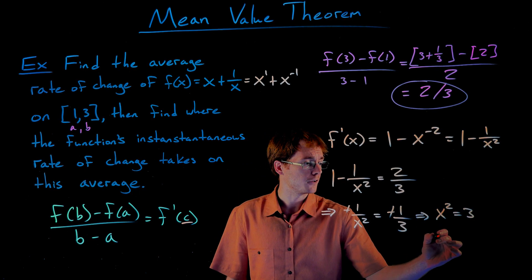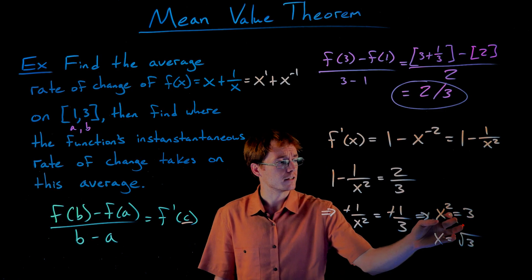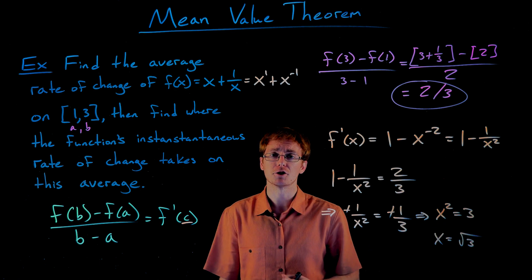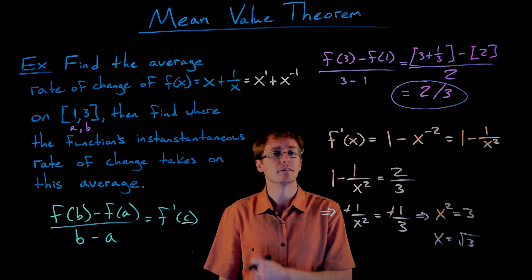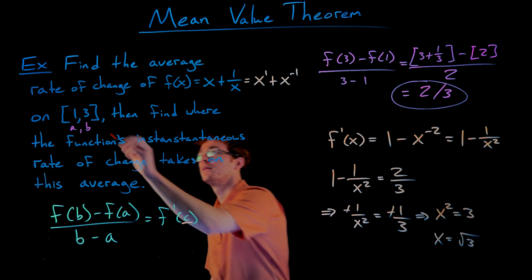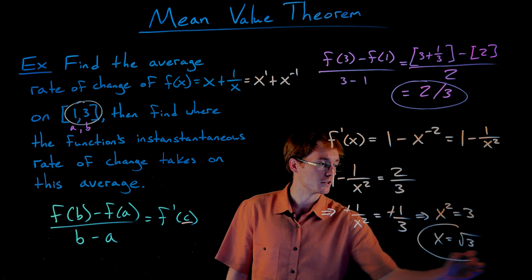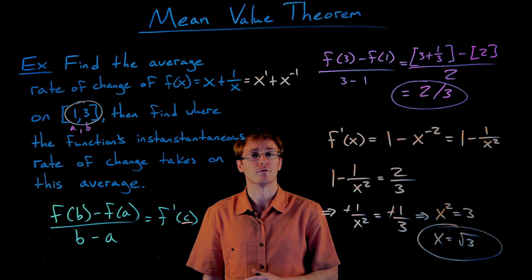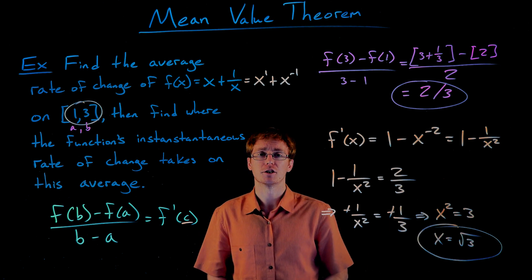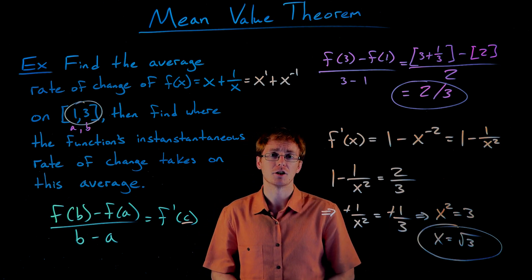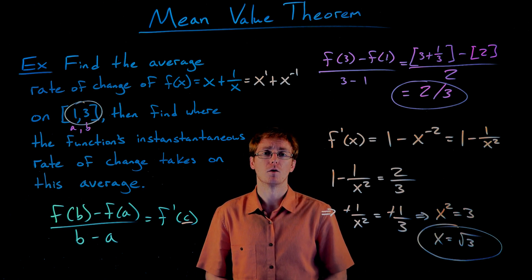To find our x value, we take the square root of each side. Technically there are two solutions: x = +√3 or x = −√3. But our interval is from positive 1 to positive 3, and only the positive square root of 3 lies within that interval. So x = √3 is the exact location where our function's instantaneous rate of change equals the average rate of change on the interval from 1 to 3.